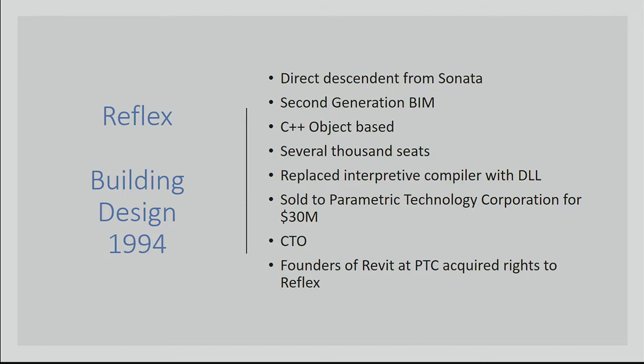They did get it some years later, albeit in a different form, and that form was close to Reflex — a direct descendant of Sonata. I sat down in 1992 and said okay, Sonata was being wound down and I had to do something different. So we went through the whole system again — second generation BIM, same idea but with C++, proper objects, dynamic link libraries to improve the performance of parametrics. I sold that to PTC for 30 million in 1996 and was chief technology officer of PTC for a couple of years. The founders of Revit were PTC employees and they acquired the rights of Reflex under a non-exclusive development license.